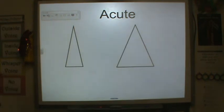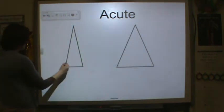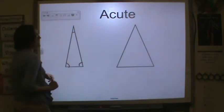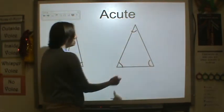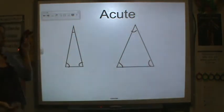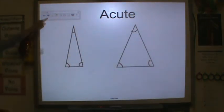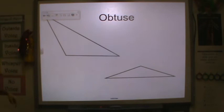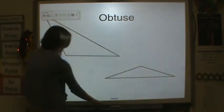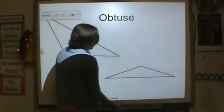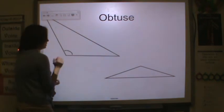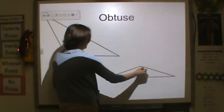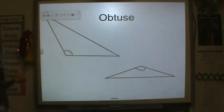Here are some acute triangles. You can see that every single angle in these triangles is acute — you need three acute angles to have an acute triangle. For obtuse triangles, remember you can only have one obtuse angle in a triangle at a time. You have an obtuse angle here and here, so these must be labeled as obtuse.